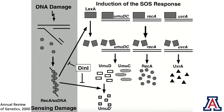This is Graham's picture — I really like it. This is the induction of the SOS response. We have DNA damage that generates replication blocks, single-stranded DNA. RecA forms on that DNA filament. This is RecA activated. RecA activated facilitates cleavage of the LexA repressor. Once that repressor is cleaved, all these SOS genes are induced and proteins are produced — the SOS polymerase, RecA, etc. It also facilitates cleavage of the UMUD polymerase to UMUD prime, which is actually the polymerase, but we didn't know it at this time.